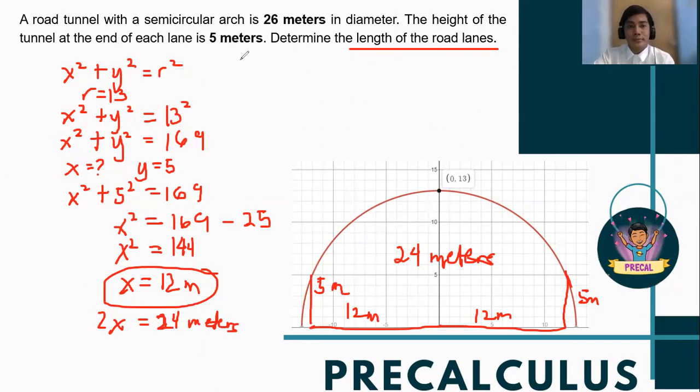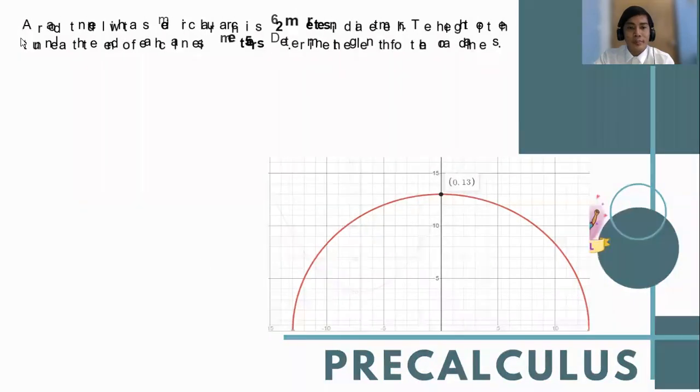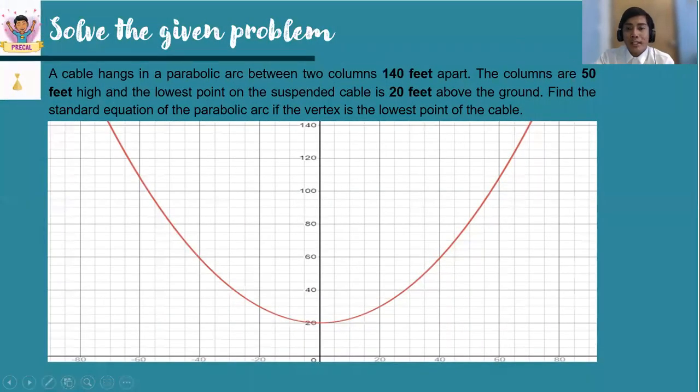Any question? Now, let us proceed to the second problem. A cable hangs in a parabolic arc between two columns 140 feet apart. The columns are 50 feet high and the lowest point on the suspended cable is 20 feet above the ground. Find the standard equation of the parabolic arc if the vertex is at the lowest point of the cable.